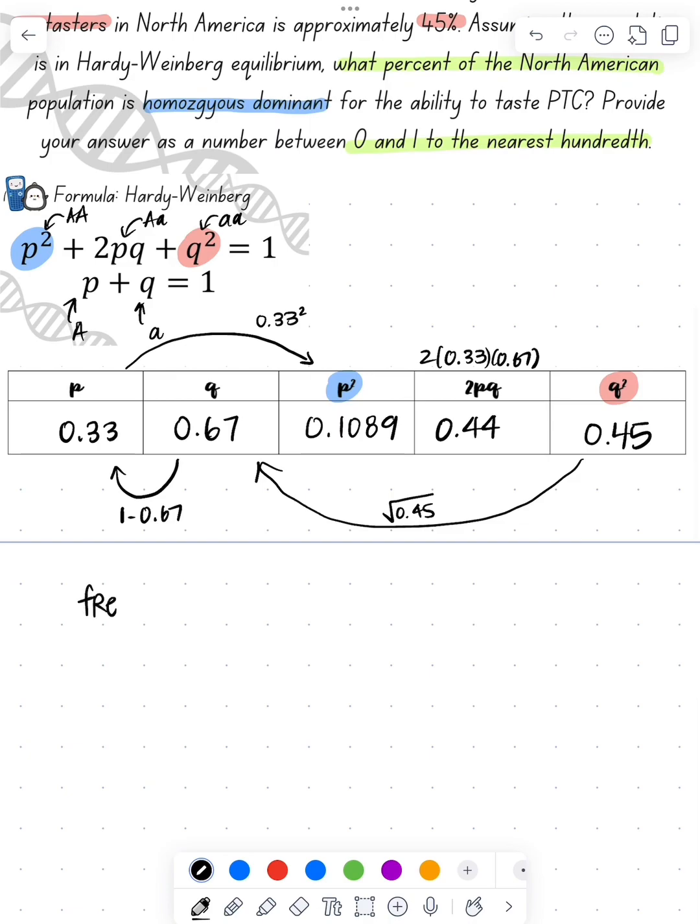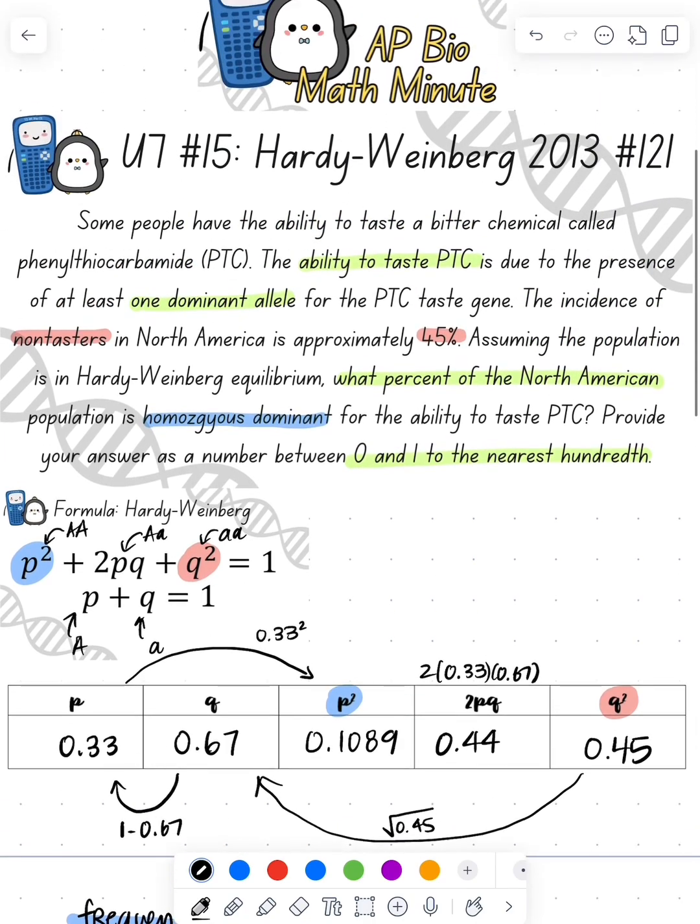Since we're looking for p², we want to give it to the hundredth place, so it's going to be 0.11. Hope this was helpful. Remember that AP Bio Payments leads to success. Bye, y'all.